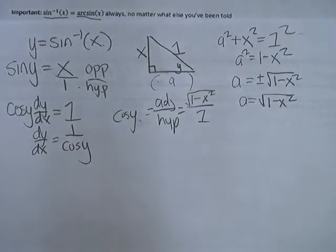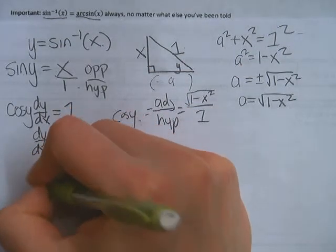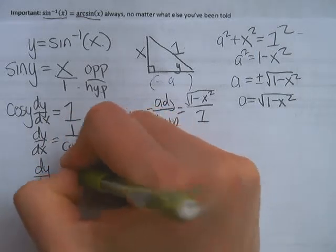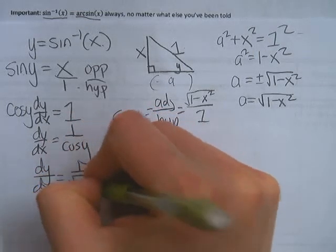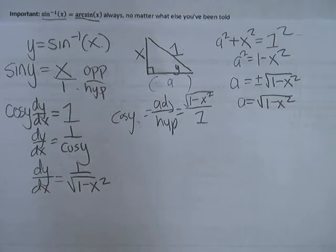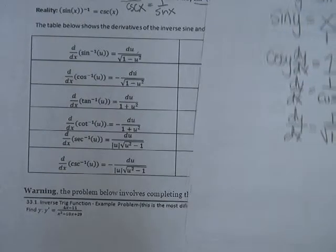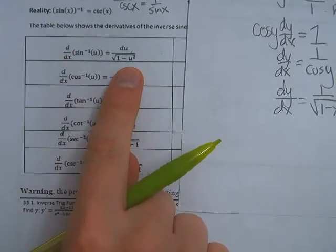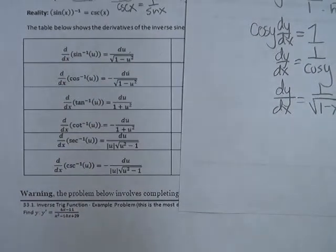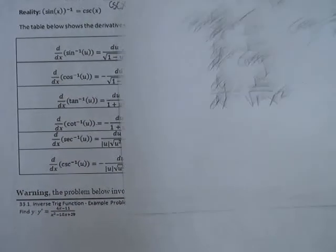So the derivative is just 1 over the square root of 1 minus x squared, which if we look back at our table, 1 minus u squared, yeah. So yeah.